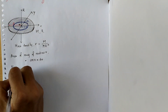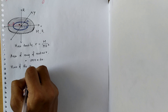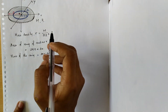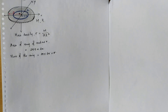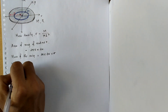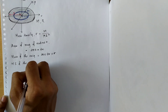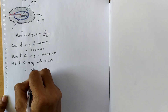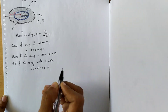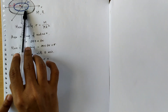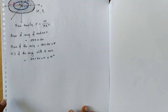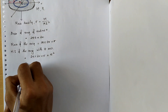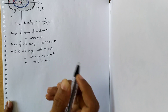The mass of this ring is equal to the area of the ring 2 pi r dr into the mass per unit area sigma. The moment of inertia of this ring with respect to the Z-axis equals the mass of the ring 2 pi r dr sigma, times the square of the distance r — since the ring is at distance r from the Z-axis. So the moment of inertia is 2 pi r cubed sigma dr.